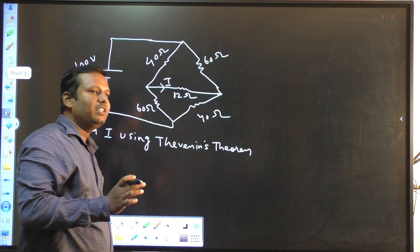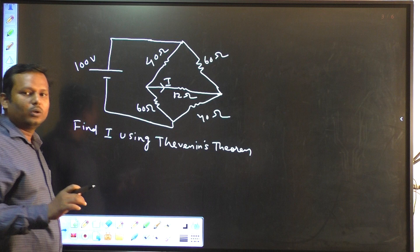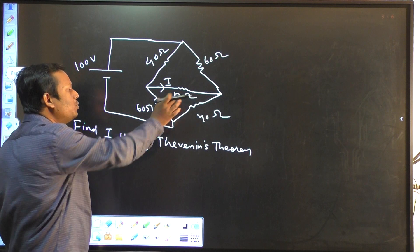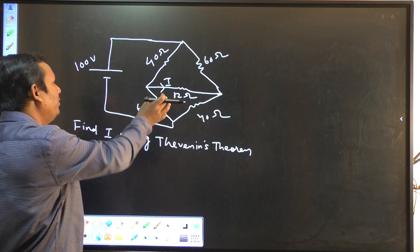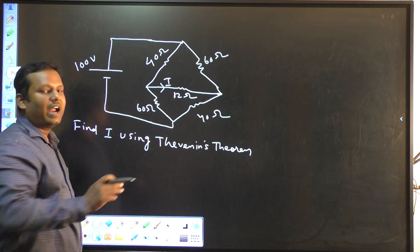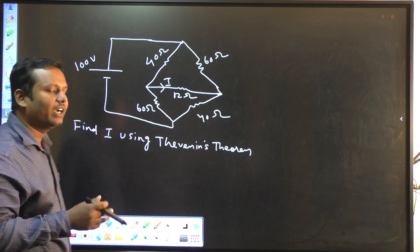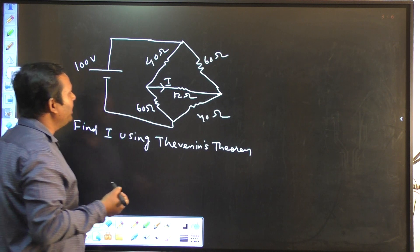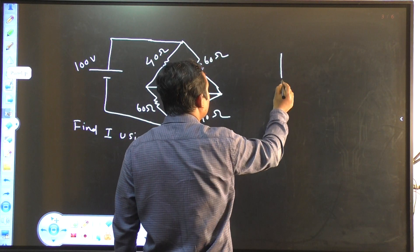In Thevenin's theorem, I have to replace the load. Your load is 12 ohm here. Load means where you have to find the current I. You have to replace this 12 ohm resistor by an open circuit and find Voc or Vth across it. Then from this open-circuited terminal, replace the voltage sources by short circuit and current sources by open circuit and find Rth. So I have to find the Vth first — I have to redraw the circuit and open-circuit this 12 ohm resistor.